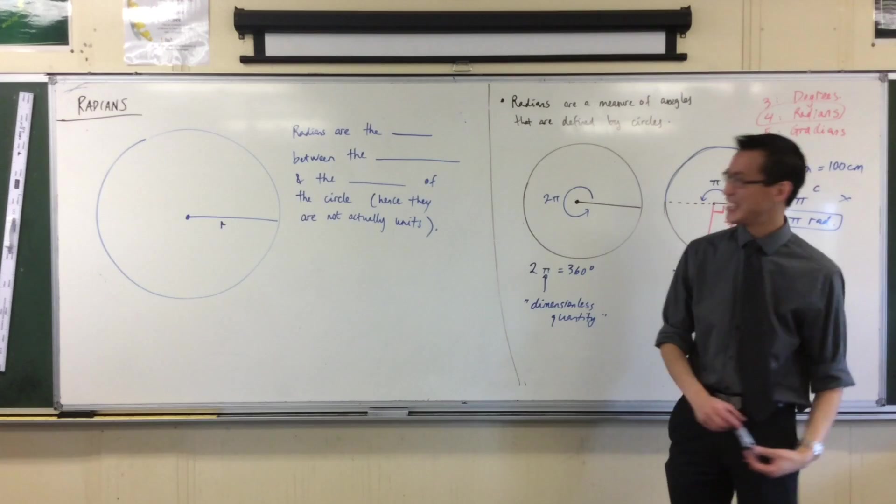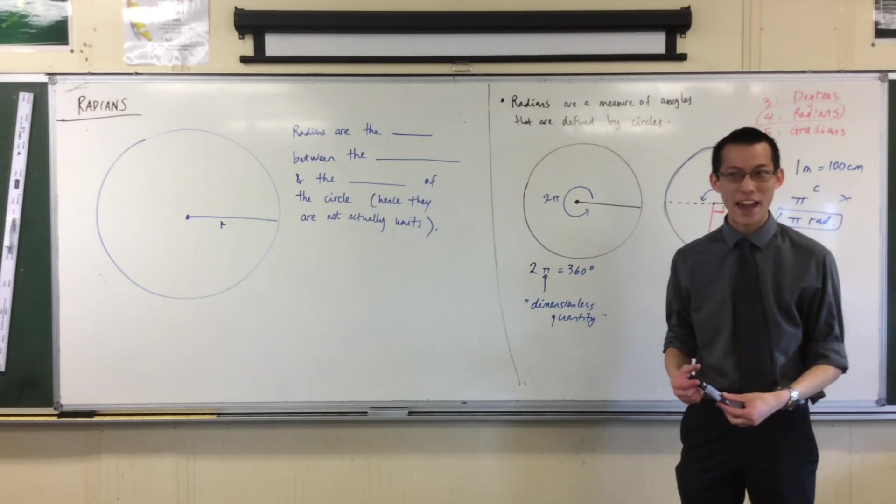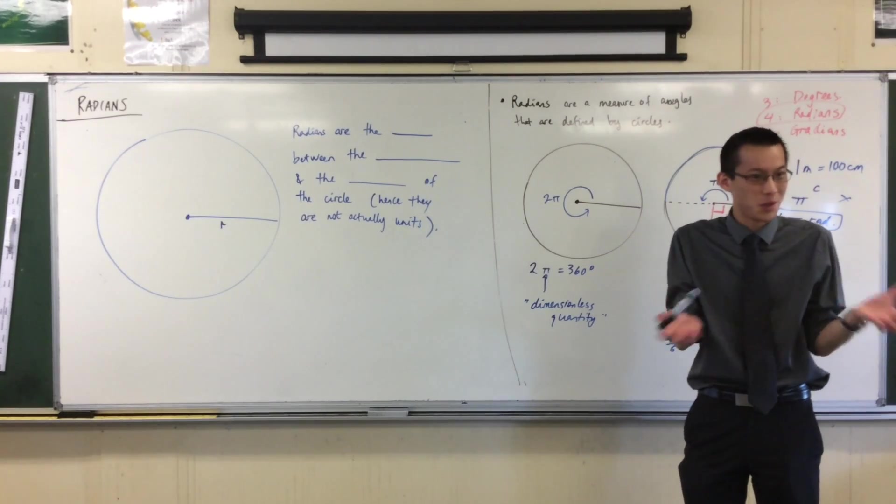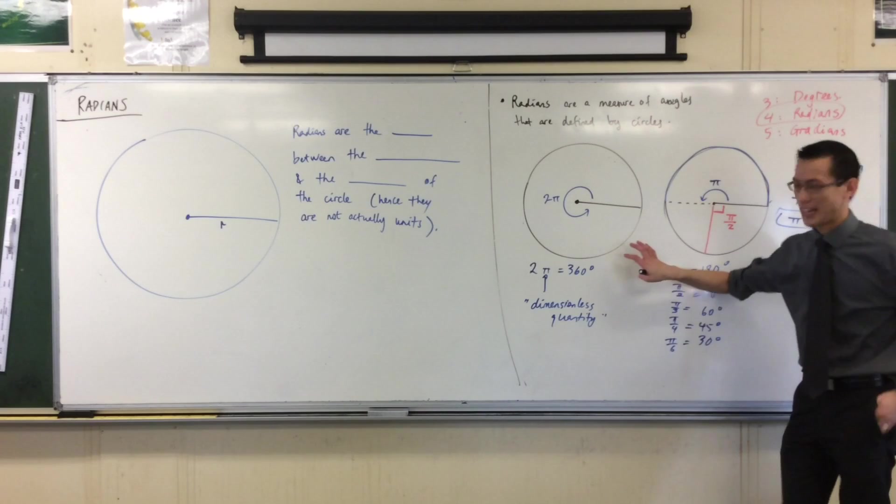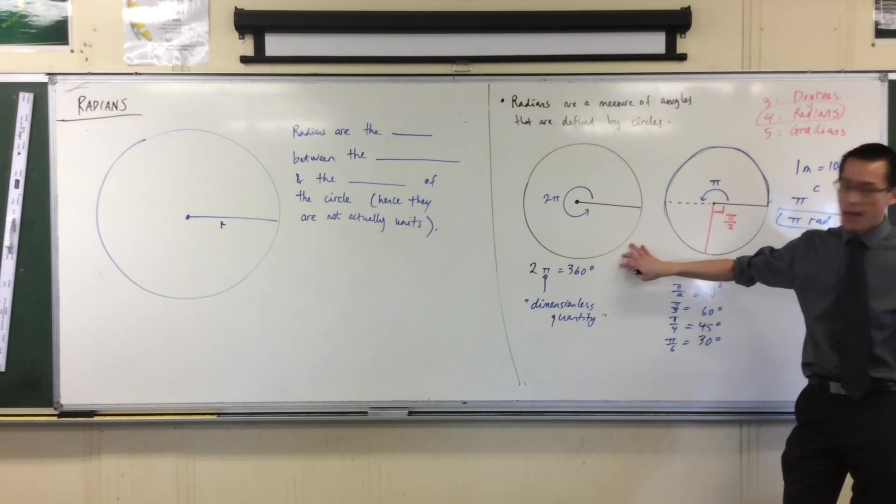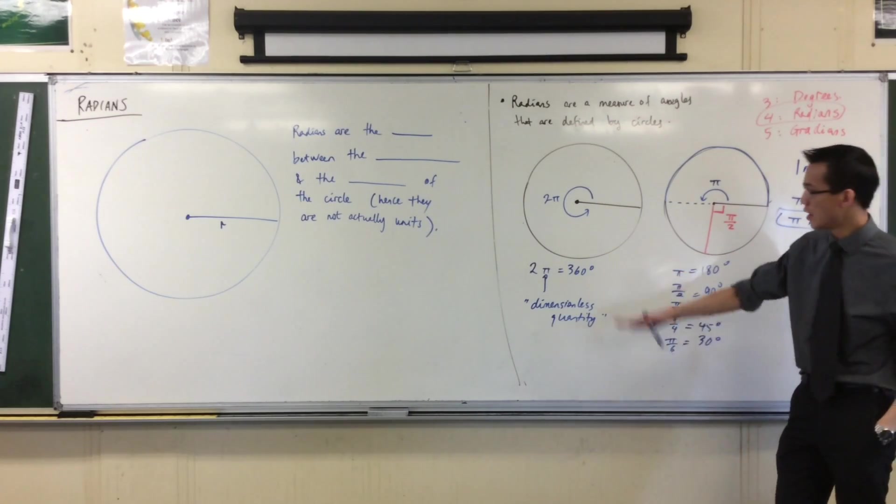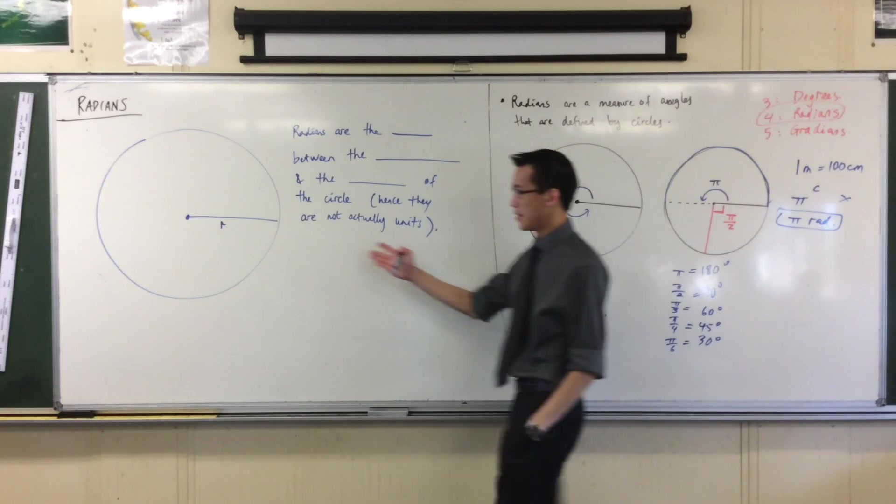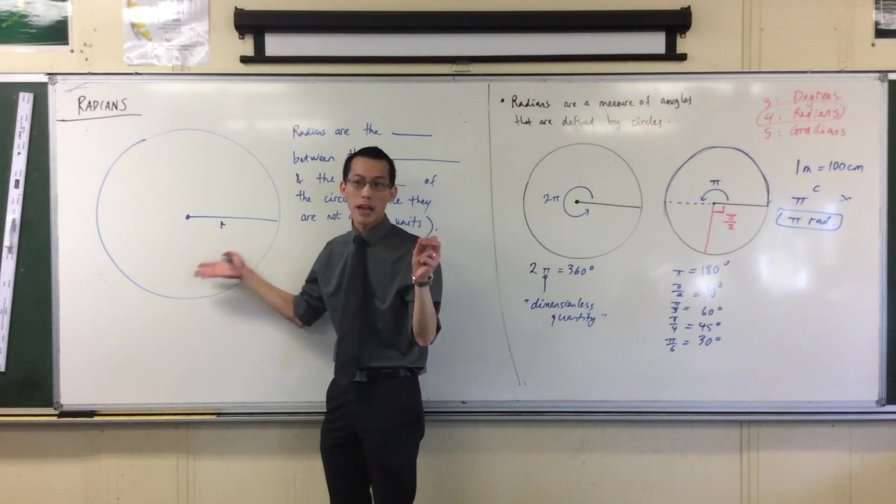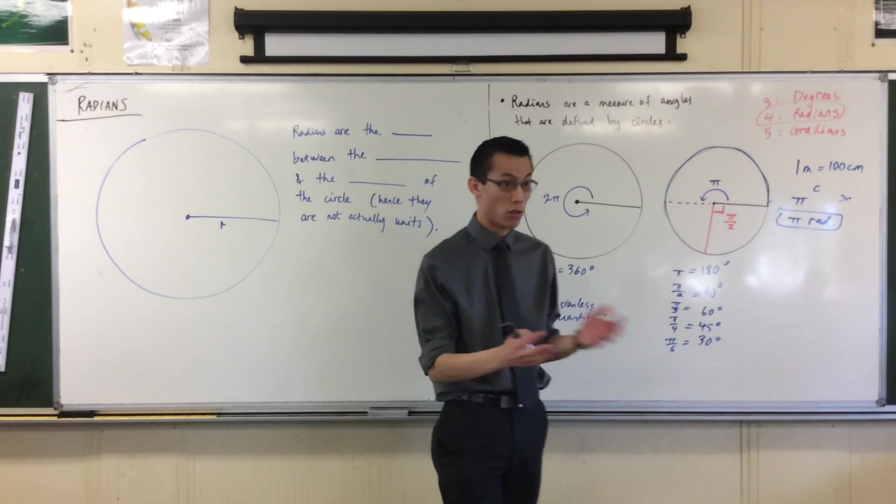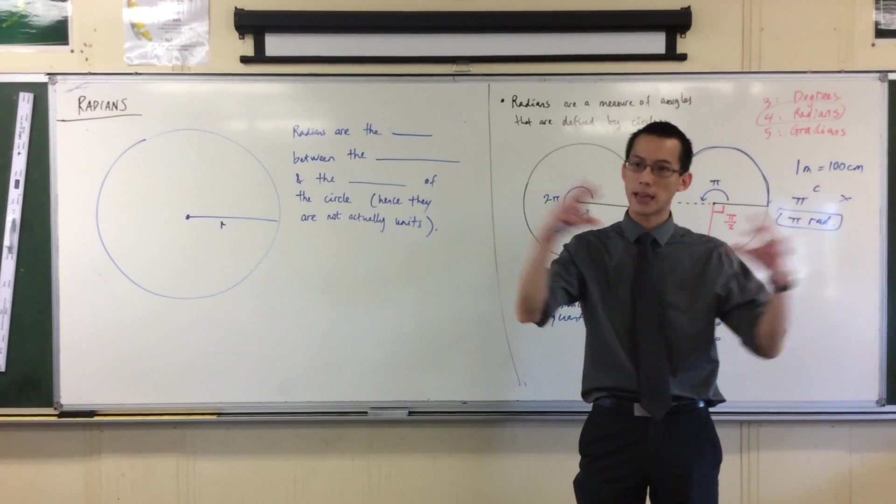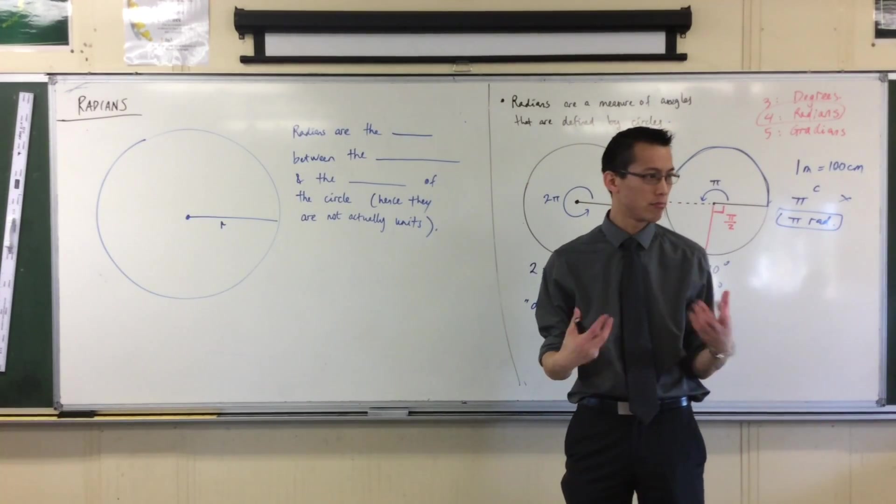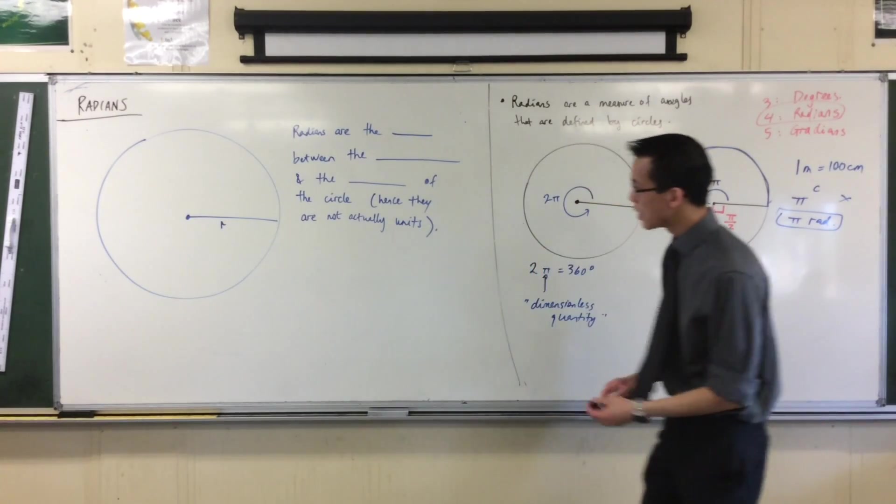But it'd be a pretty lousy measure of angles if the only circles you can measure in are the unit circle. Now, this is not a problem because every circle, because of the shape of the circle, every circle is similar to every other circle in existence. They're all similar to each other. They're just different in scale, but they all have the same shape, basically. So therefore...